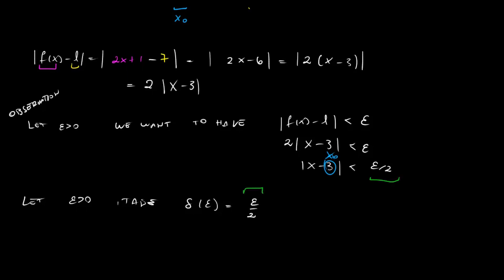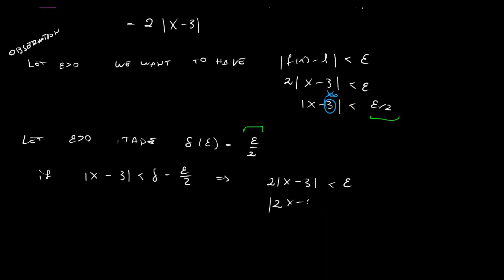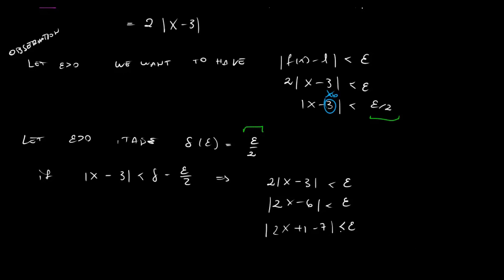Using the definition: if |x - 3| < δ = ε/2, then multiplying by 2 we have 2|x - 3| < ε, which is |2x - 6| < ε, which equals |(2x + 1) - 7| < ε. This is exactly |f(x) - L| < ε, proving that the limit as x tends to 3 of (2x + 1) is 7.